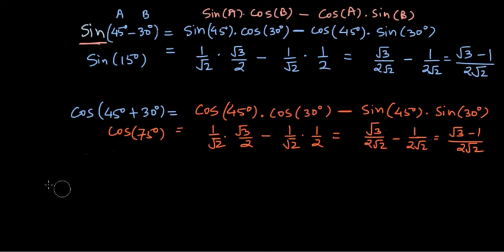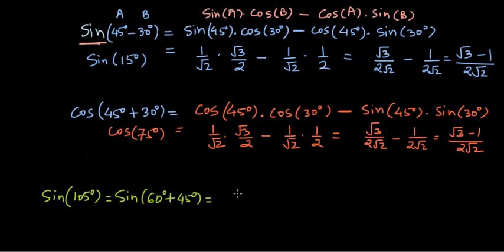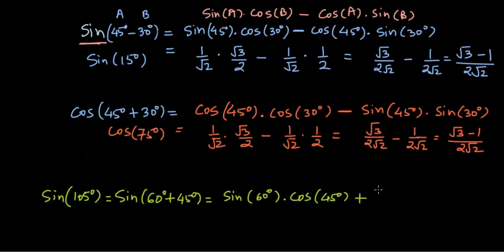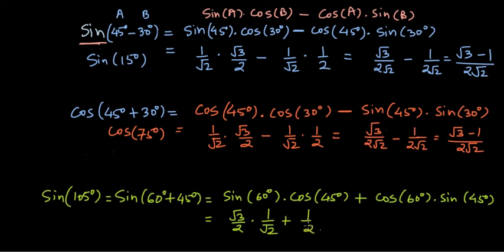Let's also solve for sine of 105 degrees, which can be written as sin(60° + 45°). Since it's a sine, we have sine and cos in multiplication and the sign stays positive. So: sin(60°) × cos(45°) plus cos(60°) × sin(45°) = (√3/2)(1/√2) plus (1/2)(1/√2), which gives (√3 + 1)/(2√2). That's how we solve for trig ratios of angles like 15°, 75°, 105°, etc.